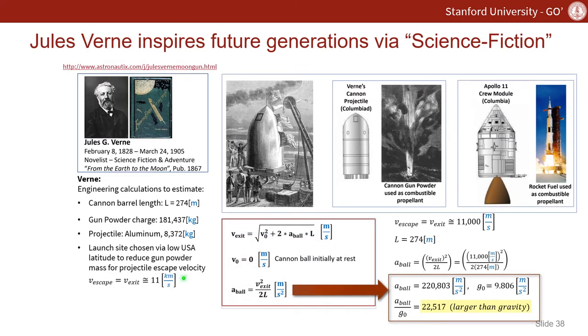Let's recall, Verne gives us an escape velocity or a muzzle exit velocity of 11 kilometers per second, and when we calculate that with the dimensions he gives us for his cannon, we end up with a 22,517 times larger acceleration than gravity in order for his Columbia projectile to make it from the surface of the Earth to the moon.